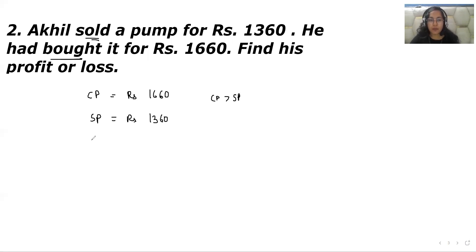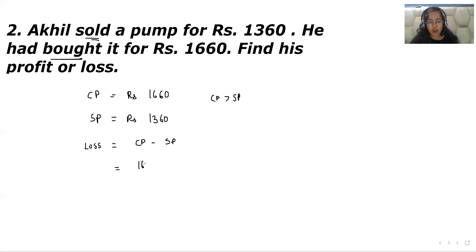Because when we bought it, we paid Rs 1,660, but when we sell it, we get only Rs 1,360 — that is a loss. The formula for loss is cost price minus selling price. The cost price is Rs 1,660 and the selling price is Rs 1,360. When we subtract them, we get 300. So we have a loss of Rs 300.